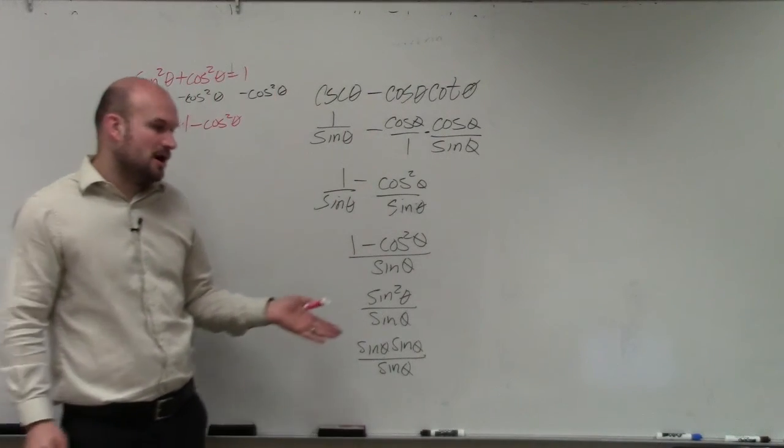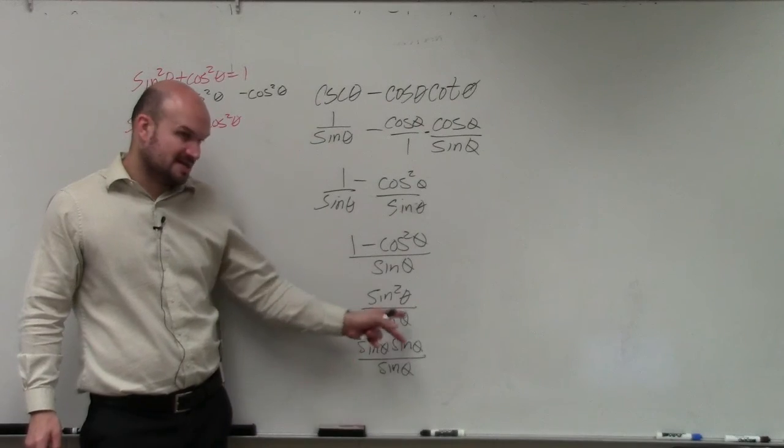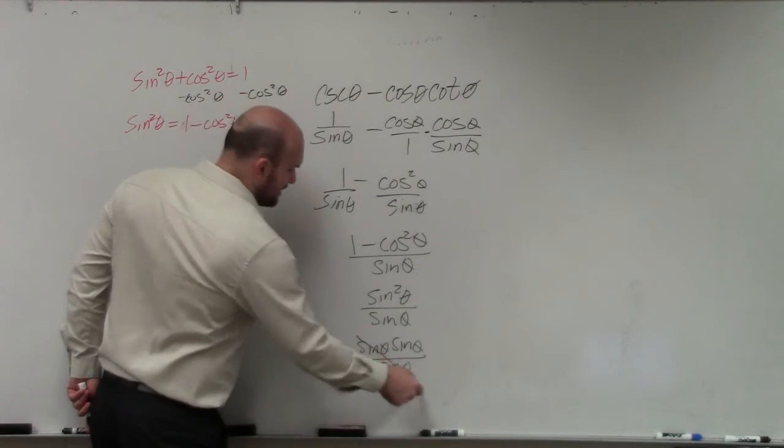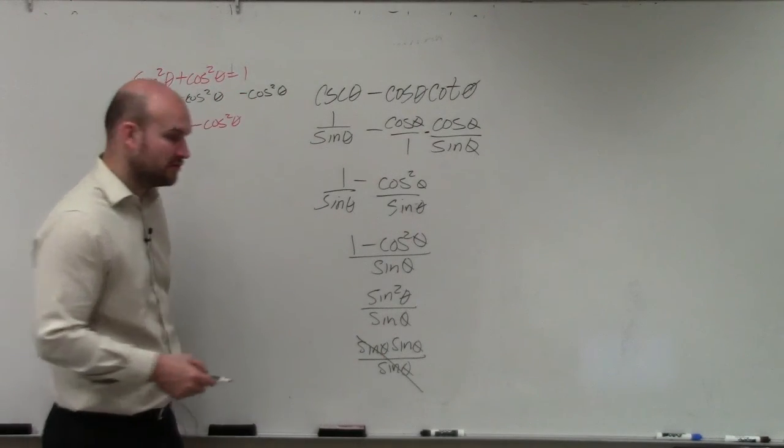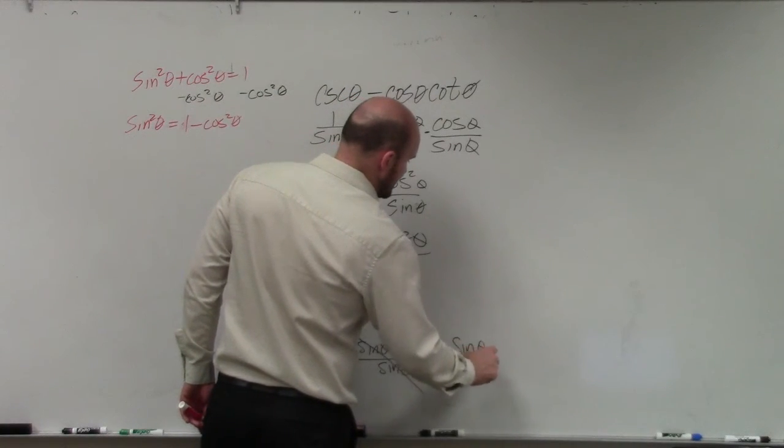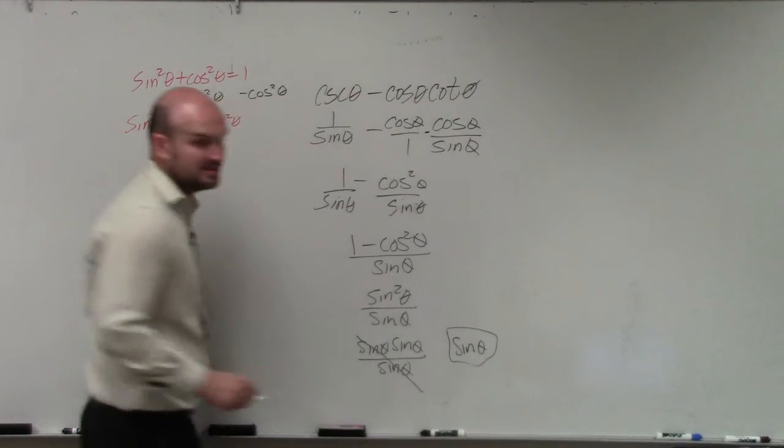So if I break apart sine squared as sine times sine, you can again apply the division property for dividing out one pair of sines. And you can see that your final answer is sine of theta.